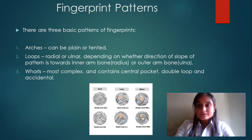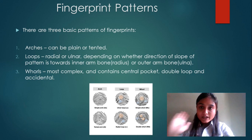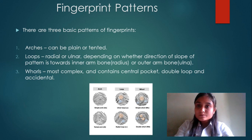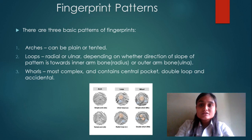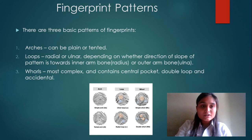Fingerprint patterns: there are three basic patterns of fingerprint — arches, loops, and whorls. Arches can be plain or tented. Loops can be radial or ulnar loops depending on the direction of slope of the patterns, toward the inner arm bone (radius) or outer arm bone. Whorls are most complex and contain central pocket, double loop, and accidental.